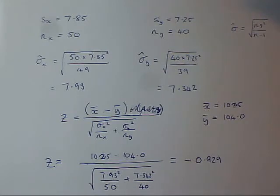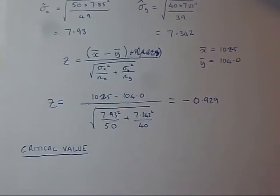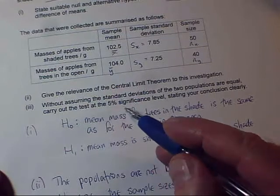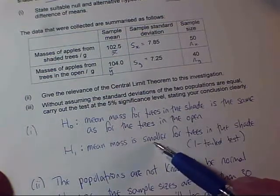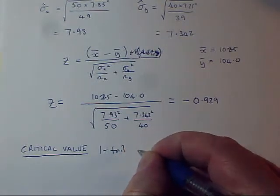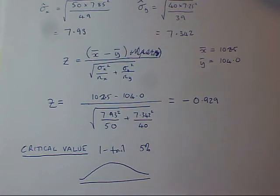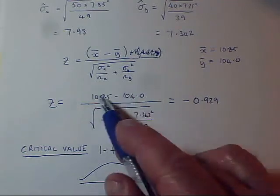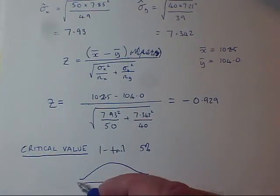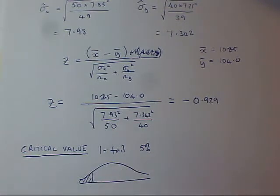We've done the test statistic; now we need the critical value, then comparison, then conclusion. For my critical value, I need a significance level — the question gives me 5% — and my alternate hypothesis is that the mean for the shaded trees is smaller, so it's a one-tailed test at 5%. I need my diagram. I'm only interested in one tail, and it's going to be the tail where I've got low values, because I'm testing whether the mean for shaded trees was smaller. The sample mean was smaller, so I got a negative z value, and I'm interested in this lower tail.